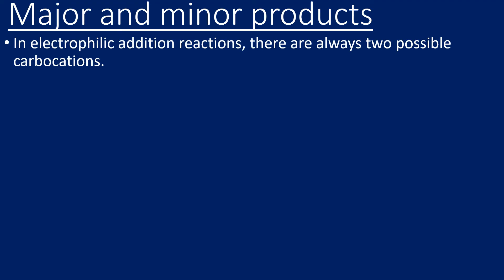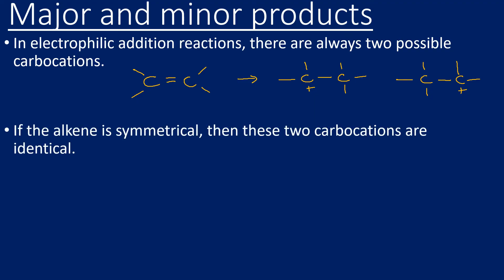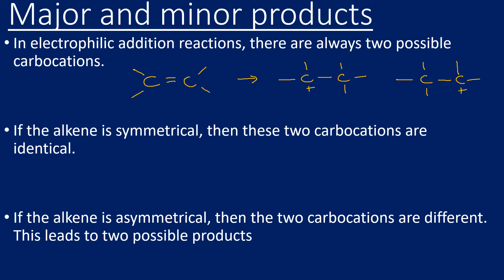It's the relative stability of these carbocations that can give rise to a mixture of products — a major and a minor product. In electrophilic addition reactions of alkenes, there are always two possible carbocations. The carbocation could form on the left or right carbon of the double bond. If the alkene is symmetrical, those two carbocations are identical and you only get one product; if it's asymmetrical, you get a major and a minor product.